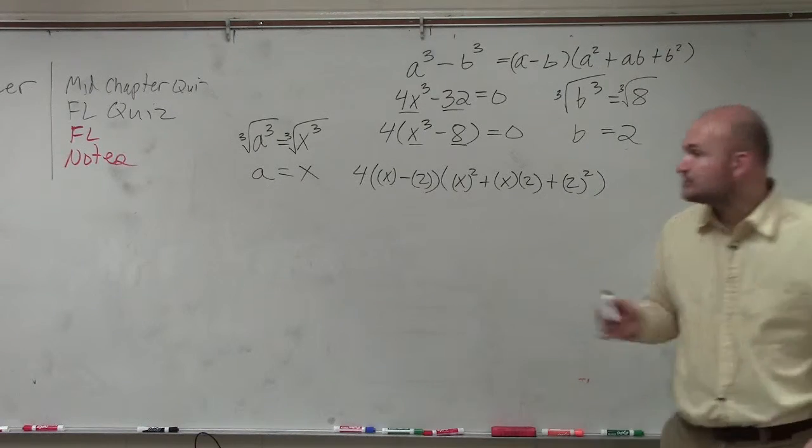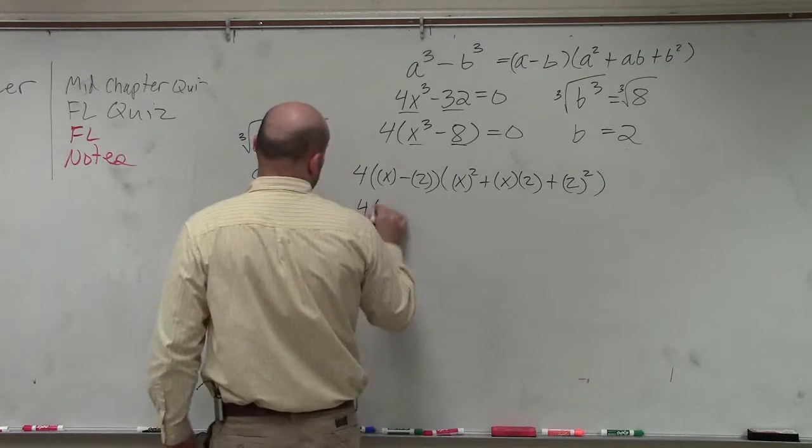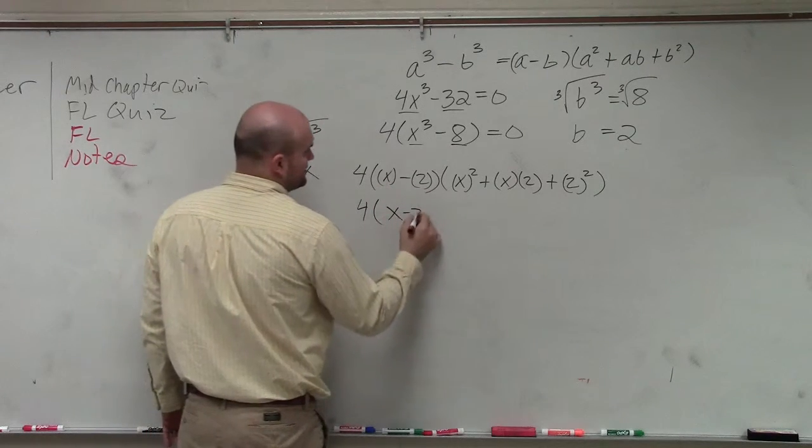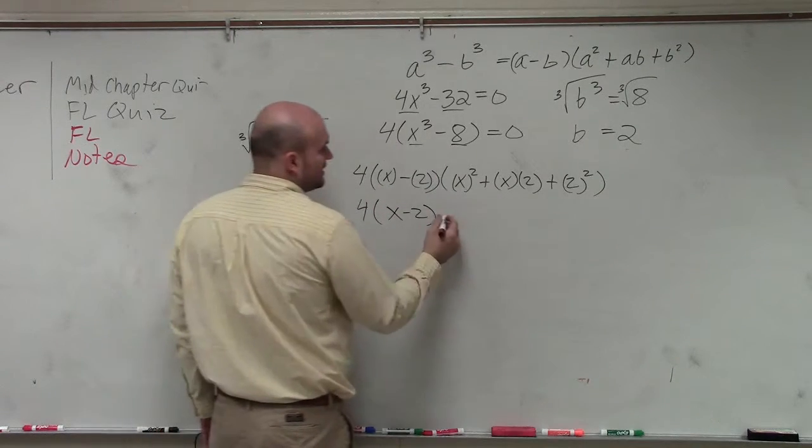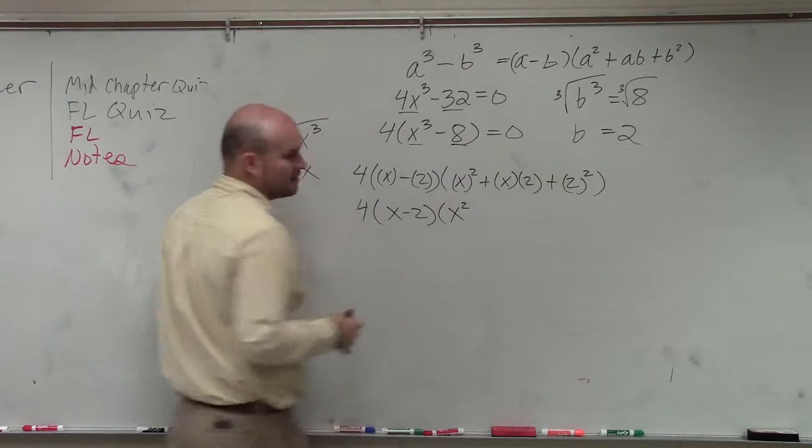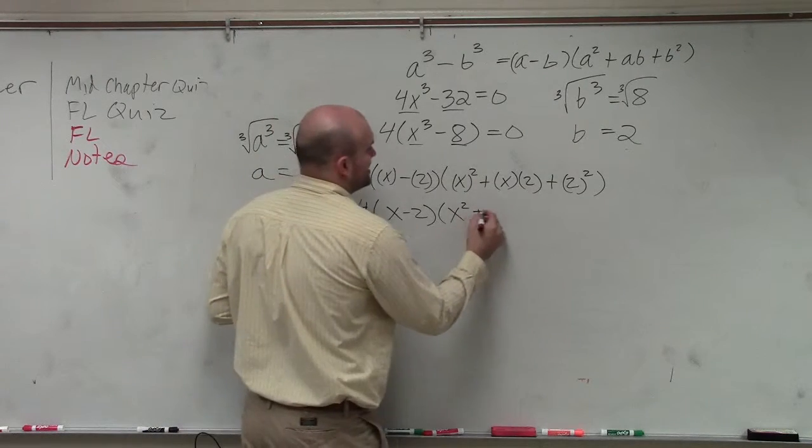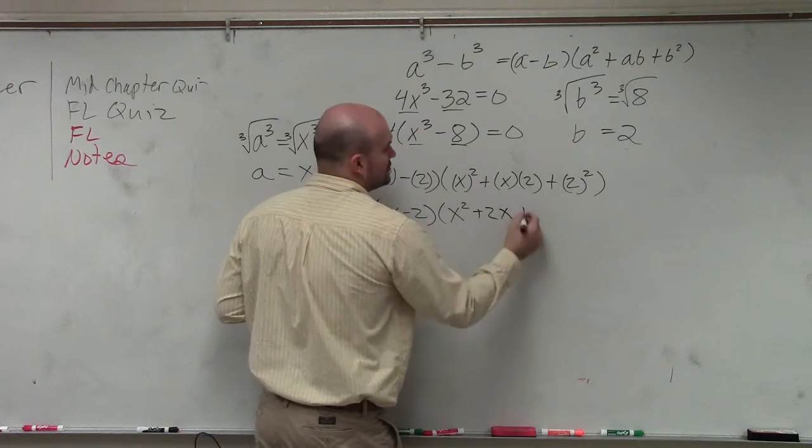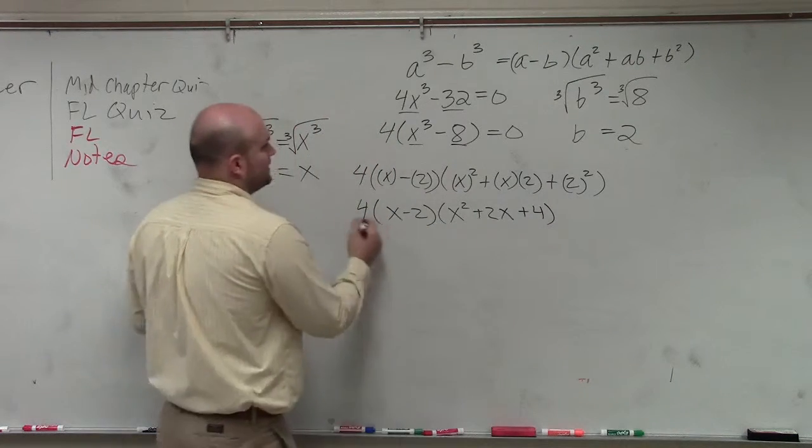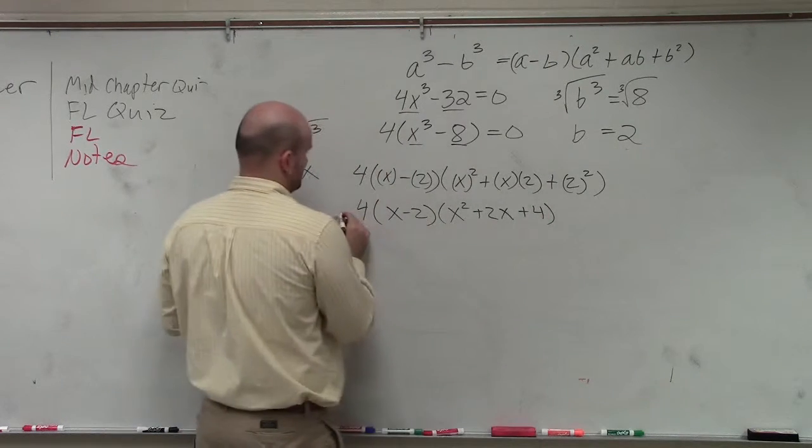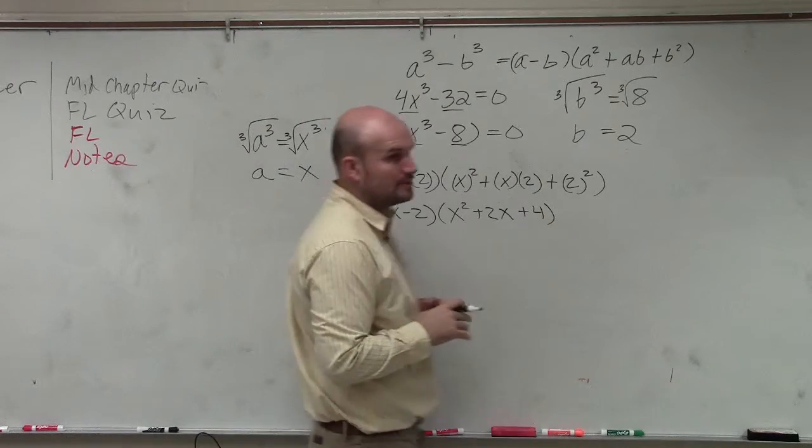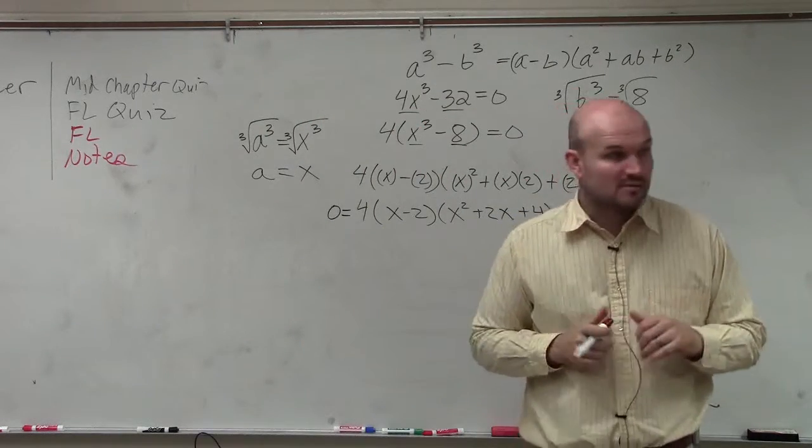So now I can just go ahead and simplify. x minus 2 is just x minus 2. x squared is x squared. x times 2 is the same thing as a positive 2x. And then 2 squared is going to be 4. And that was equal to 0. That's all I asked you guys to do for your homework last night.